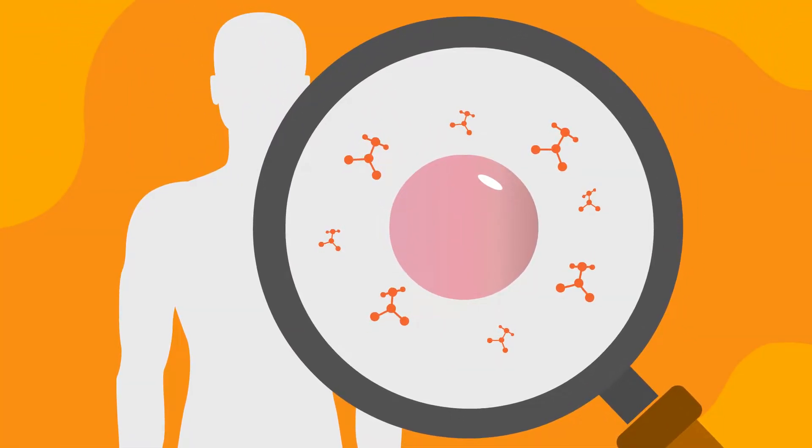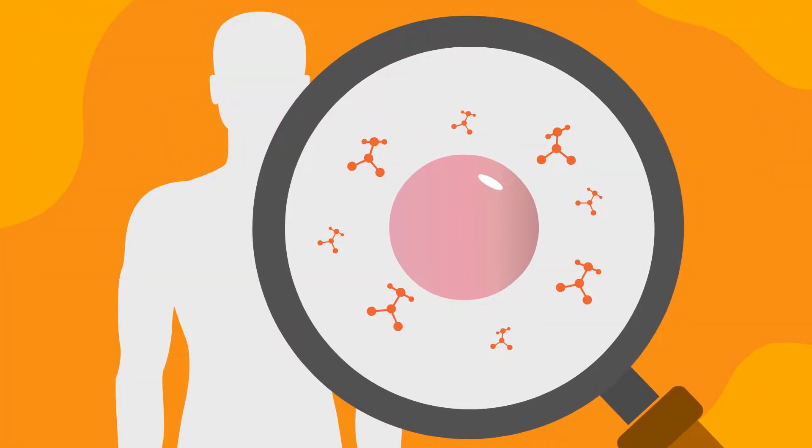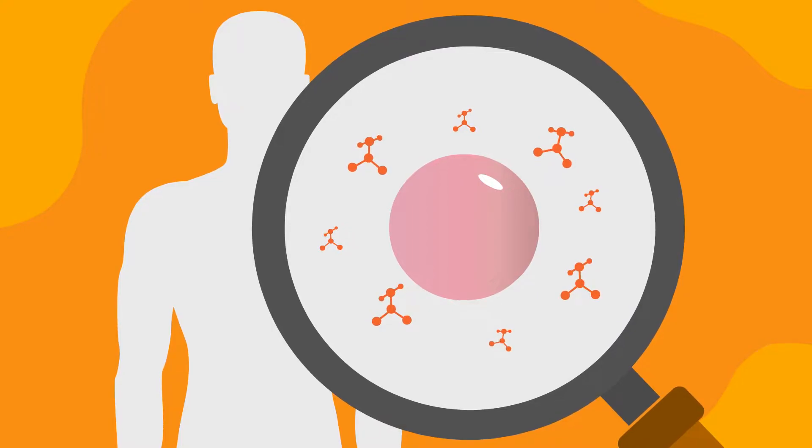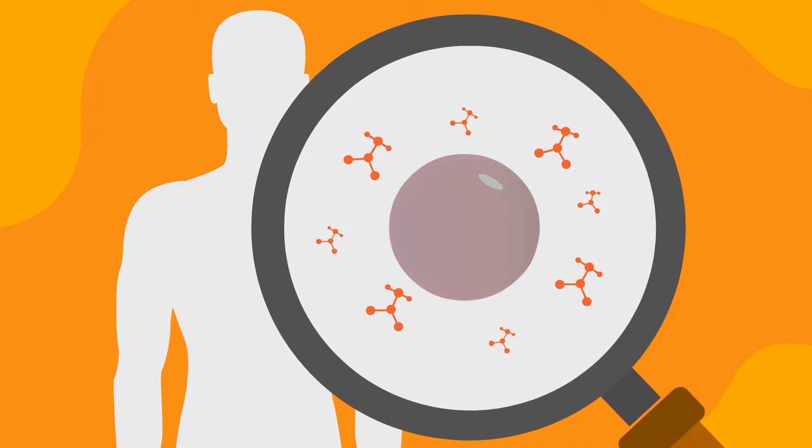Glutathione is present in every cell in the human body and as you age, internal production of the body's master antioxidant slows down.